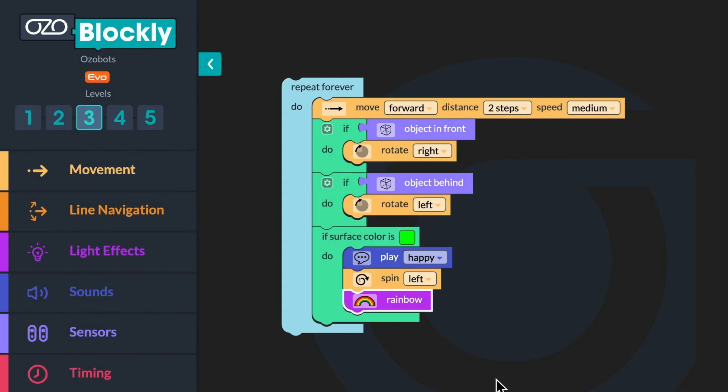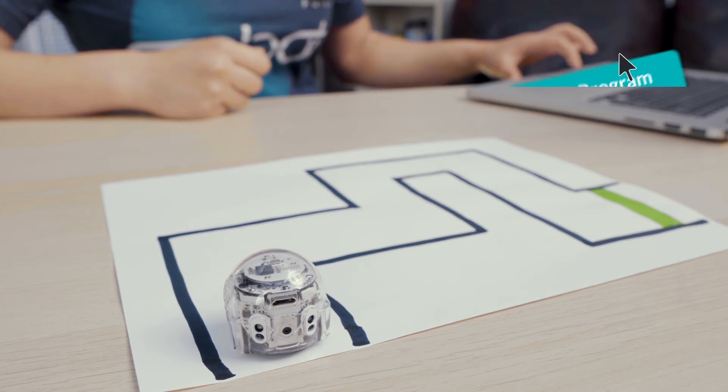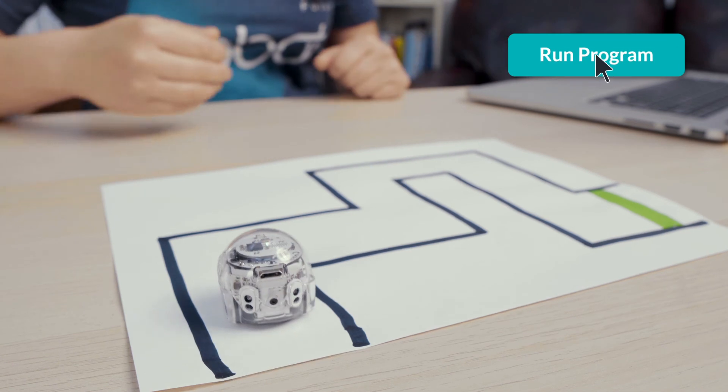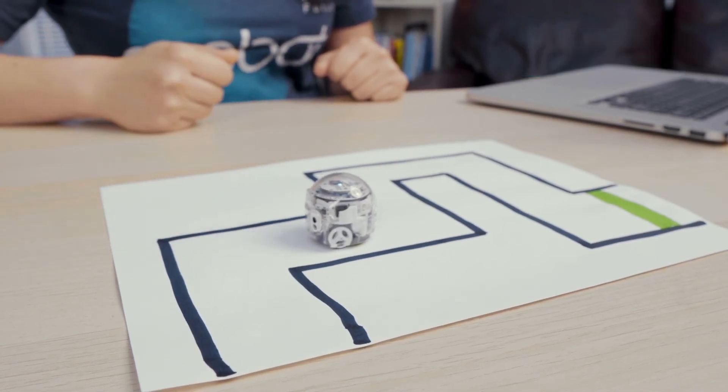Are you ready to play your maze game? Put your bot back on the start of your maze. Then run your program to tell your bot to start moving. Use your hands to guide your bot to turn correctly through the maze. When your bot reaches the finish line, it should celebrate.